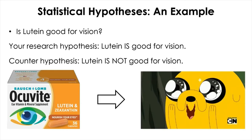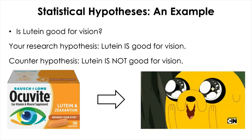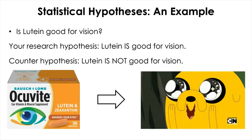However, it is not very clear if the substance will be beneficial to normal vision in general. Let's assume that you think it will be and want to conduct research. In this case, your research hypothesis will be that lutein is good for vision. To have a complete statistical hypothesis, you need another hypothesis called a null hypothesis to complement your research hypothesis. In this case, the null hypothesis going against your research hypothesis states that lutein is not good for vision.